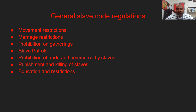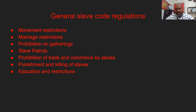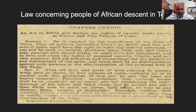Sixth, punishment and killing of slaves. In extreme situations, when slaves were disobedient, they would receive lashes, and there were laws that legalized that — even the killing of slaves if they tried to run away or rebel. Seventh, restrictions on education, such as slaves not being allowed to learn how to read.